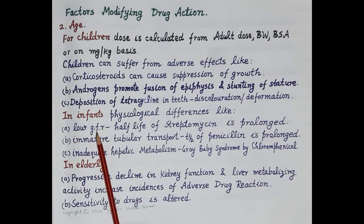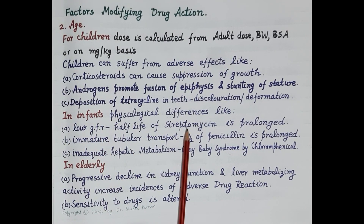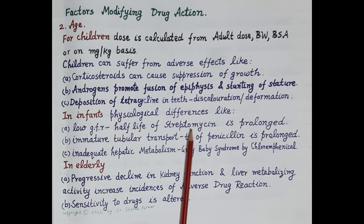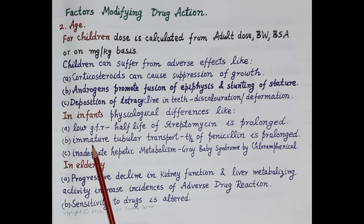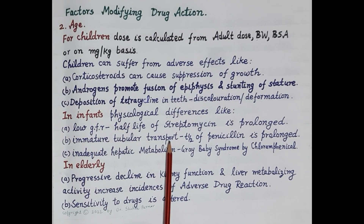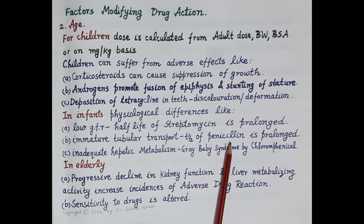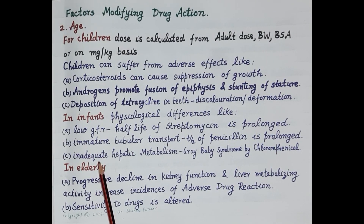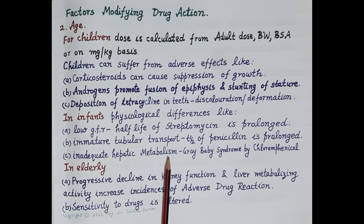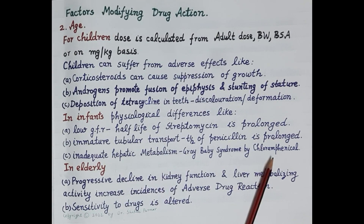In infants, due to low glomerular filtration rate, the half-life of drugs like streptomycin is prolonged, as streptomycin is excreted by glomerular filtration. Due to immature tubular transport of the kidney, the half-life of drugs like penicillin is prolonged, because penicillin is excreted in urine by tubular secretion. Liver immaturity leads to inadequate hepatic metabolism of drugs like chloramphenicol.